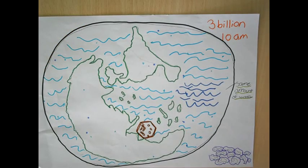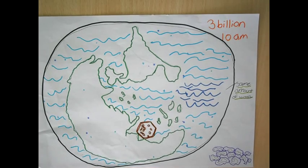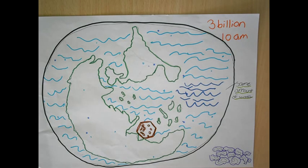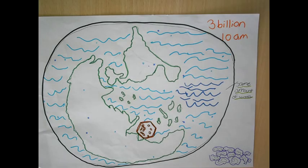3 billion years ago, at 10 a.m., the development, evolution, and growth of life increased the quantity of oxygen in the atmosphere from 1% to 10%. There was the same amount of water, and the first continent appeared, named Earth, 3 billion years ago. Common rocks were sedimentary. There was nothing but simple cells.